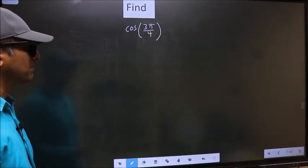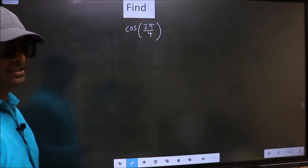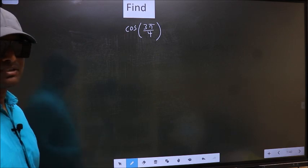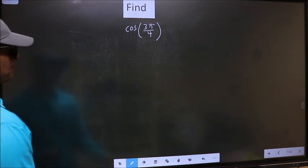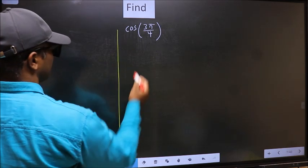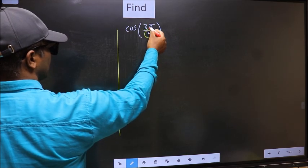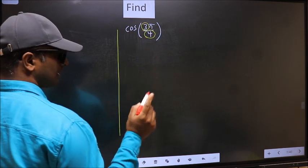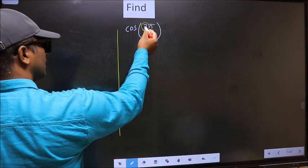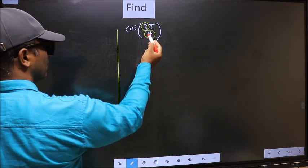Find cos 3π/4. To find this, we should follow this method C. In the denominator, we have 4. In the numerator, 3. Now you should check, 3 is close to which multiple of 4?